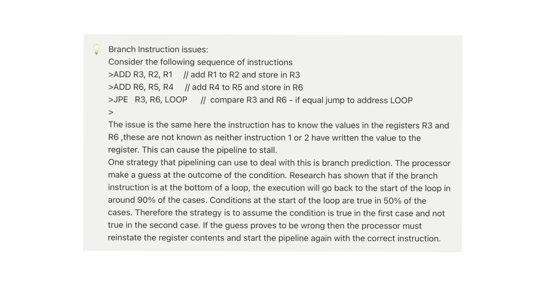One strategy that pipelining can use to deal with this is branch prediction. The processor makes a guess at the outcome of the condition. Research shows that if the branch instruction is at the bottom of a loop, the execution will go back to the start of the loop in around 90% of the cases. Conditions at the start of the loop are true in 50% of the cases. Therefore, the strategy is just to assume that the condition is true in the first case and not true in the second case. If the guess proves to be wrong, then the processors must reinstate the registry contents and start the pipeline again with the correct instruction.